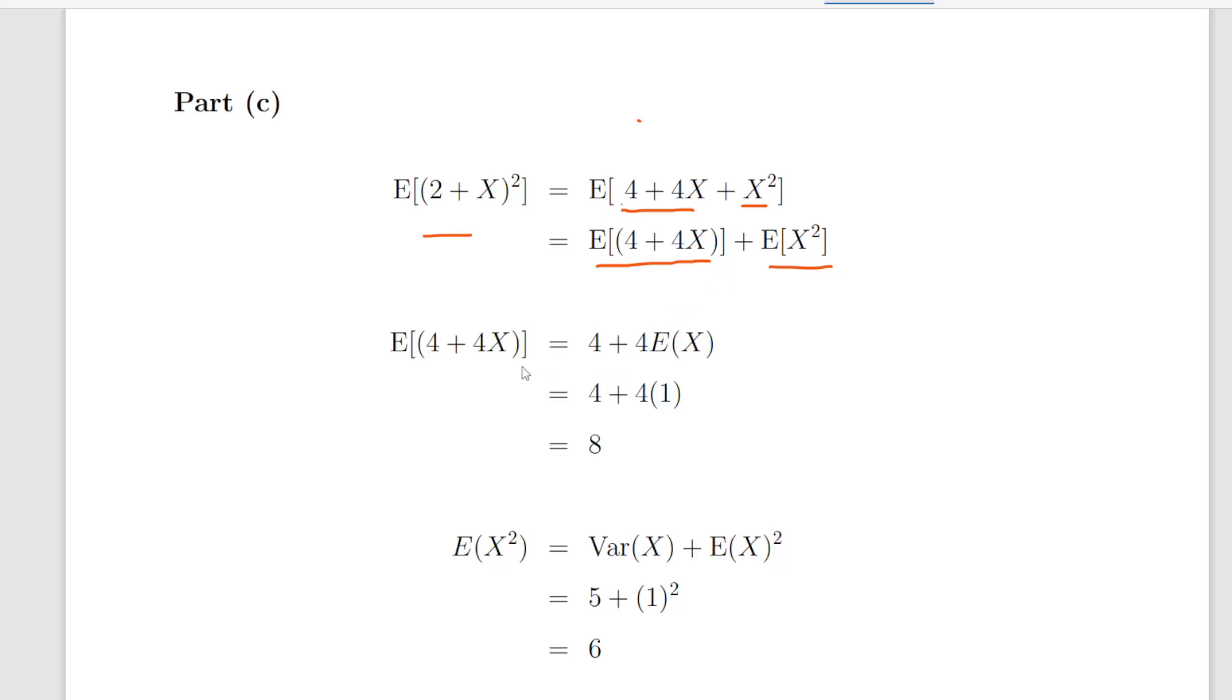The expected value of 4 plus 4X is equal to 4 plus 4 times the expected value of X, which is 4 plus 4 times 1, that is equal to 8.